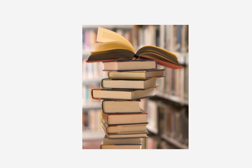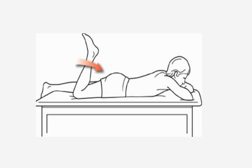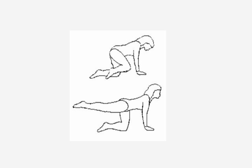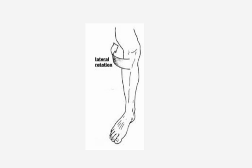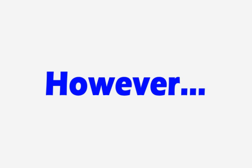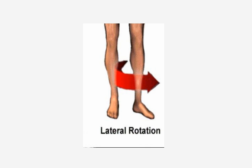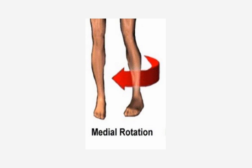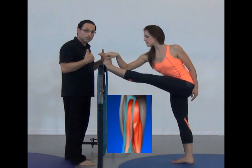Most standard anatomy texts describe the muscle as the flexor of the knee, extensor of the hip, and lateral rotator of the semi-flexed knee. However, the muscle is also a lateral rotator of the hip. In simplest terms, adding medial rotation — which is opposite of what the muscle does — to the mix will focus on the lateral hamstrings.